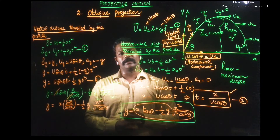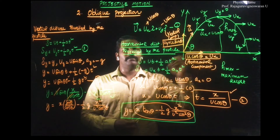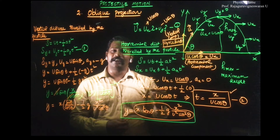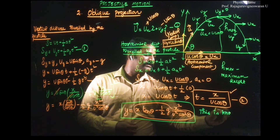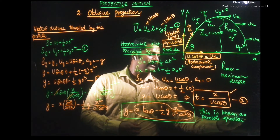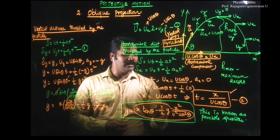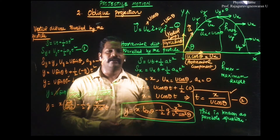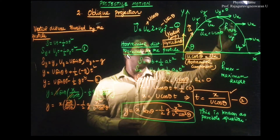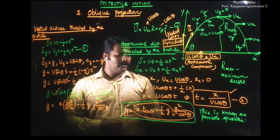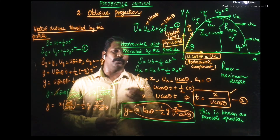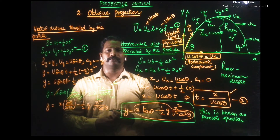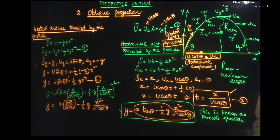This is the parabola equation. The path followed is a parabolic path. So, y = x tanθ − gx² / (2u² cos²θ) is the parabola equation for motion along a parabolic path. This is a parabola — a very simple but very important topic. Thank you.